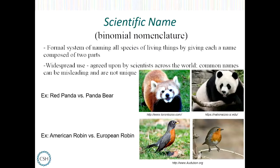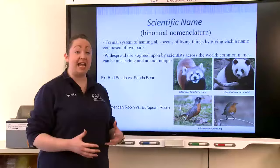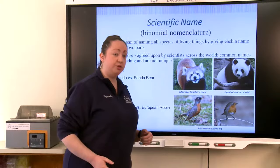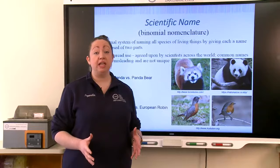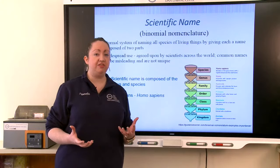Another example: on the left I have the American robin, on the right the European robin. They're both named robin because they share some characteristics, such as that orange breast you can see in both pictures. But in fact, both robins are not closely related to each other at all. This leads us to developing a scientific name to classify these different organisms.